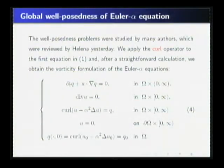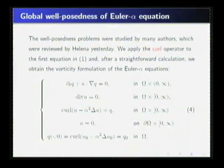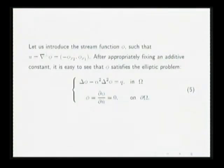Now we state global existence of Euler-alpha. This well-posedness problem was studied by many authors, which was reviewed by Alina yesterday. Now we will use a different view to prove the global existence. So we applied the curl operator to the first equation in system one. By direct calculation, we obtained the vorticity formulation of Euler-alpha equation, described by four. We define the solution as the stream function phi. Stream function satisfies the elliptic problem described by five.